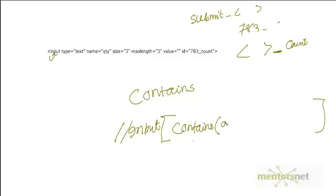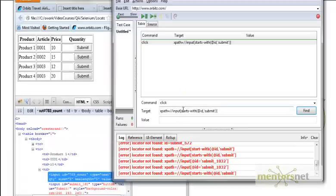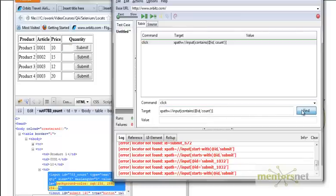So let's rewrite the XPath. We have //input, then we use the function contains. The contains function takes @id as the first parameter and 'count' as the second parameter, since 'count' is the static part. The XPath becomes: //input[contains(@id, 'count')]. So if you do this, even if you refresh the page and whatever number you get, this will still find the element.